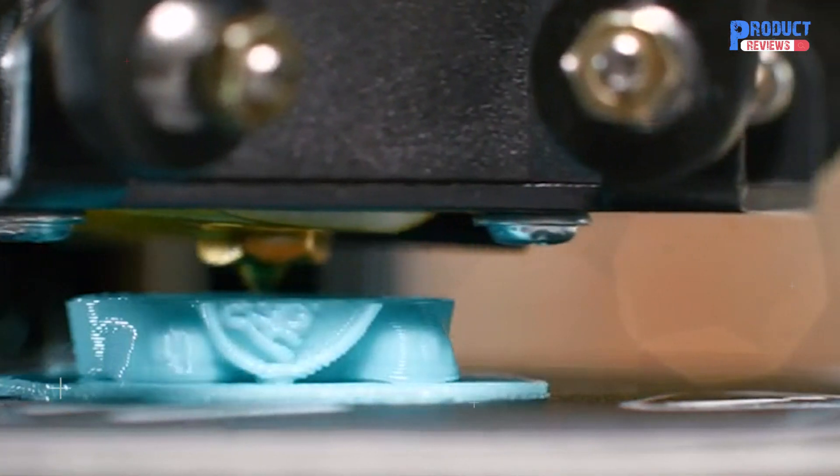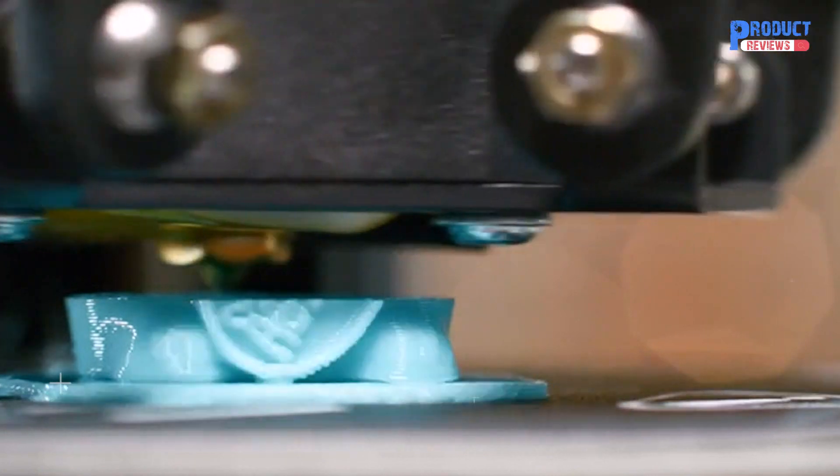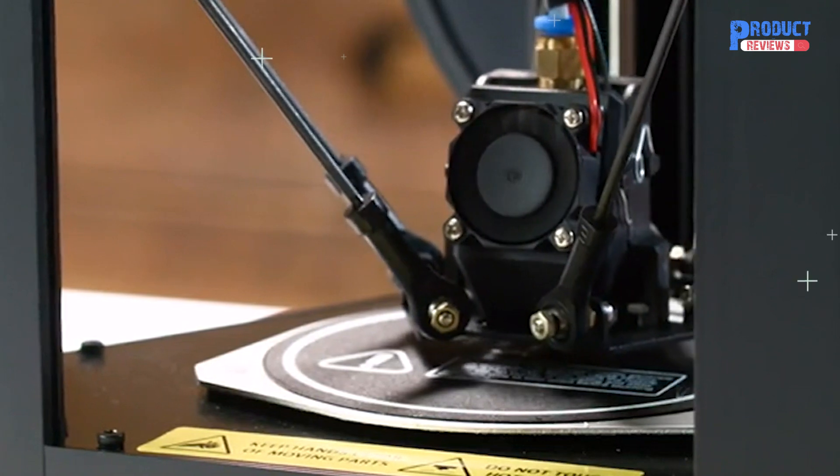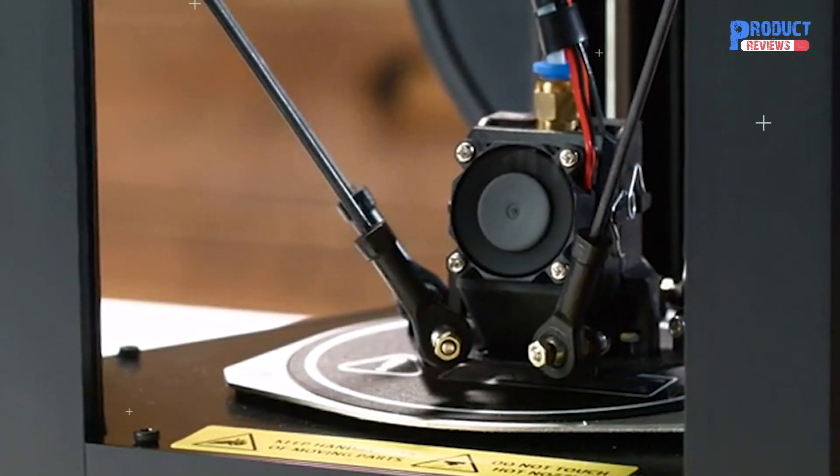One of the biggest hurdles for any 3D printer is maintaining a level print surface which can lead to poor quality prints, adhesion problems, and clogs. The MP Mini Delta addresses all those with auto bed leveling for easy setup and printing.